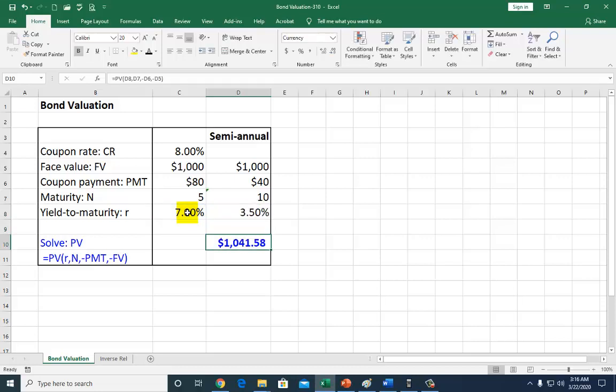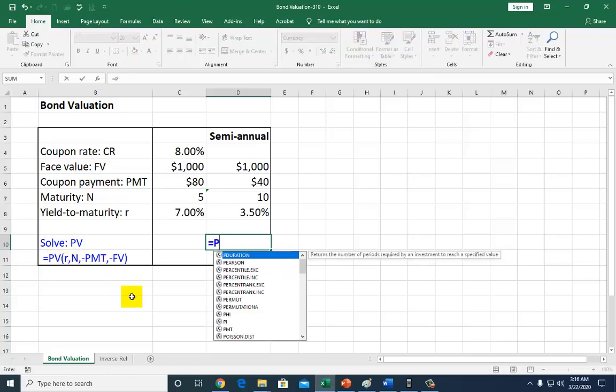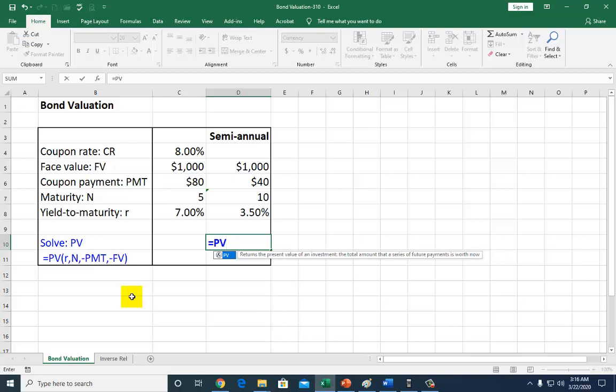To get this price, or this value of 1,041.58, use, that's your cheat sheet right here. That's the function. So hit equal, and type PV, uppercase, lowercase, it doesn't matter. Open parenthesis. And actually, Excel shows it to you right here. Rate, number of periods, payment, and future value if you have it. And we do.